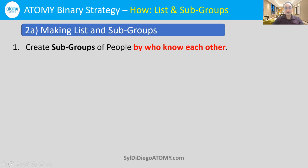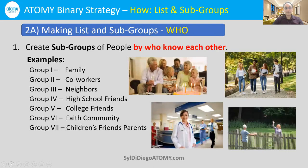So you know you're going to want to share with different people. What we want to do in Atomy is cluster or combine people who know each other into subgroups before we even think of placing them on the left line or the right line. Examples of some subgroups that you'll make are family, coworkers, neighbors, high school friends, college friends, faith community members, and children's friends' parents. What we want to make sure we do is if people know each other, then keep them together.